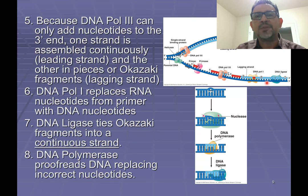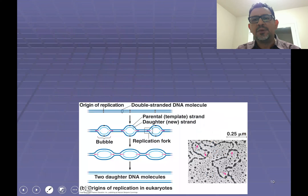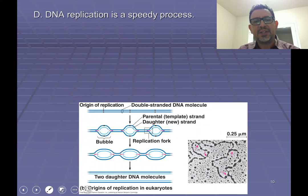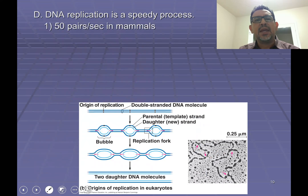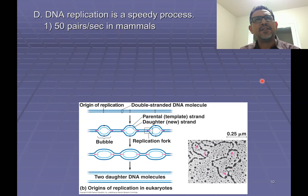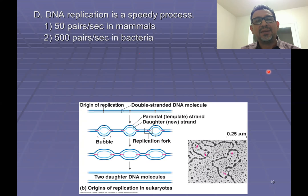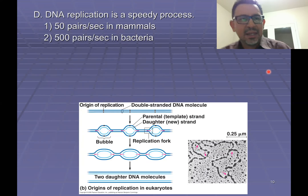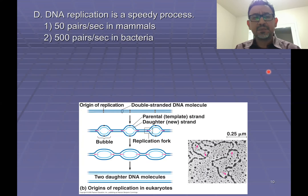One more thing about DNA replication is that this is a really speedy process. The estimates for how quickly bases are copied by DNA polymerase vary from one source to another. Some sources estimate that in mammals, DNA polymerase works at a rate of about 50 bases per second. If you look at prokaryotes like bacteria, it's actually going to be 10 to 20 times faster according to some estimates — about 500 bases per second are going to be copied in bacteria.